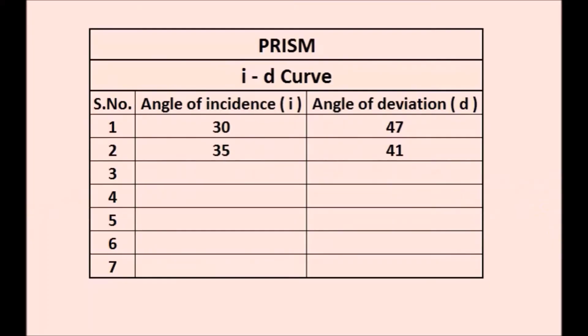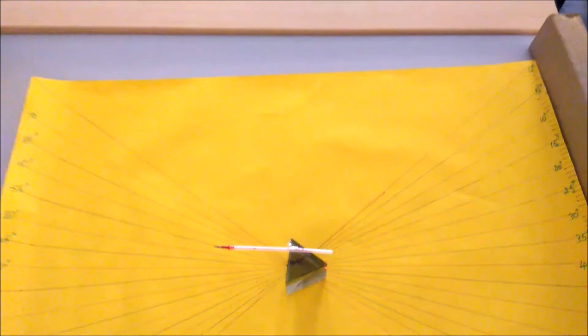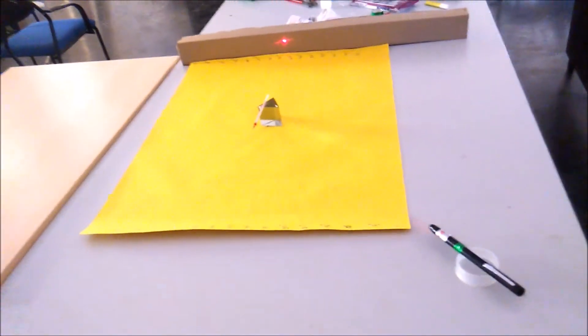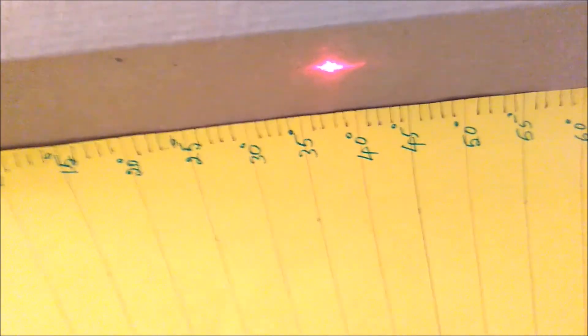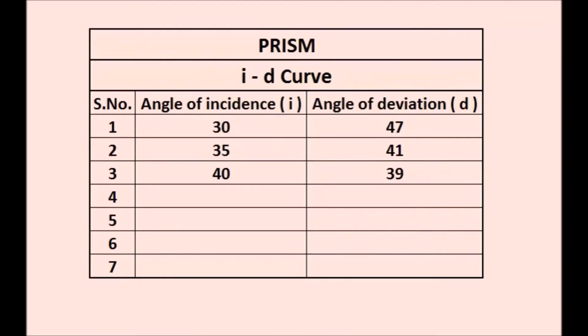For an angle of incidence of 40 degrees, the angle of deviation is 39 degrees. For an angle of incidence of 45 degrees, the angle of deviation is 38 degrees.